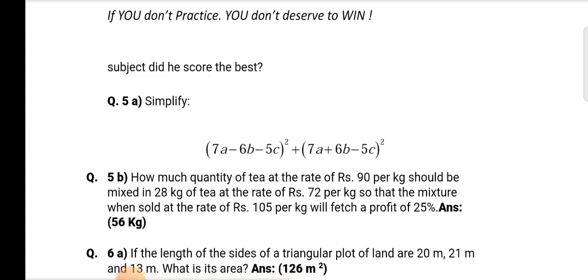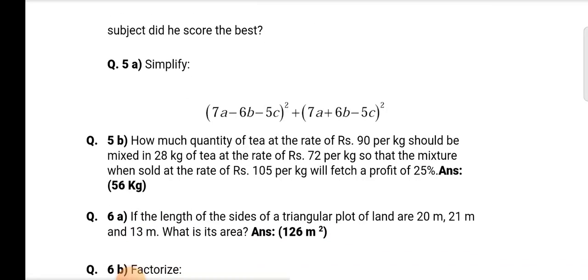Question number 5a: Simplify, in first bracket 7a minus 6b minus 5c whole square plus another bracket 7a plus 6b minus 5c whole square.